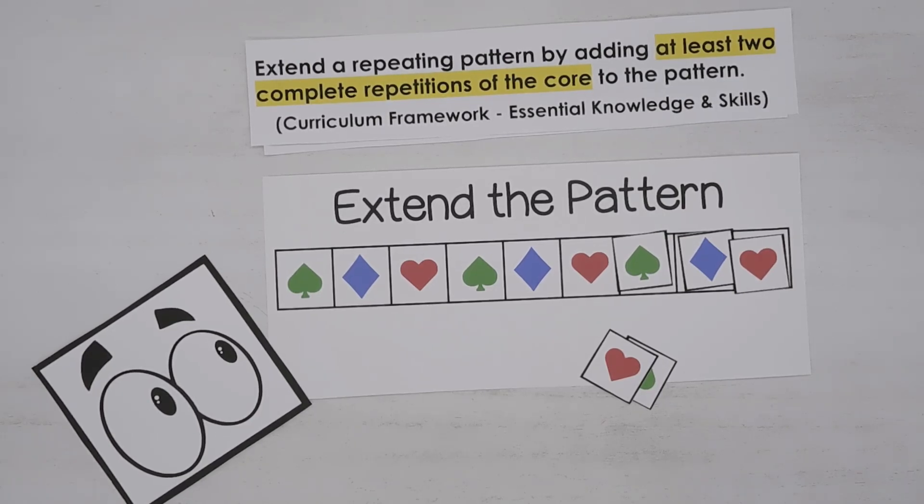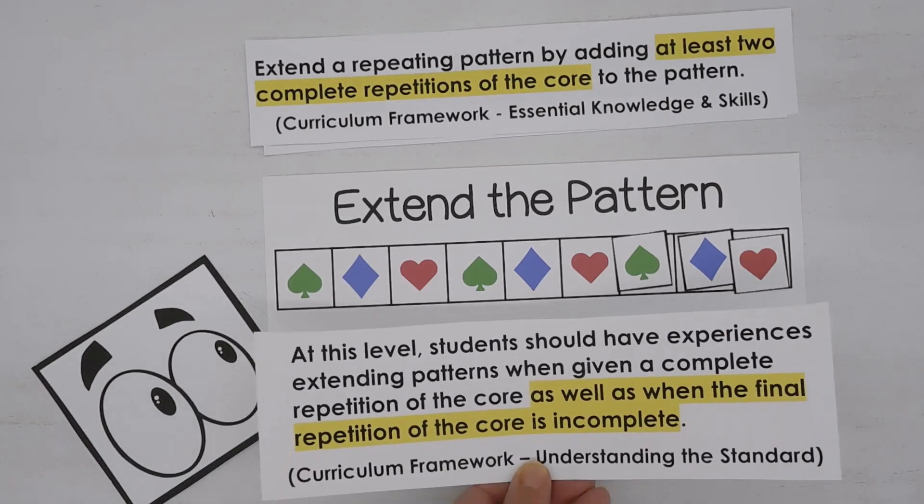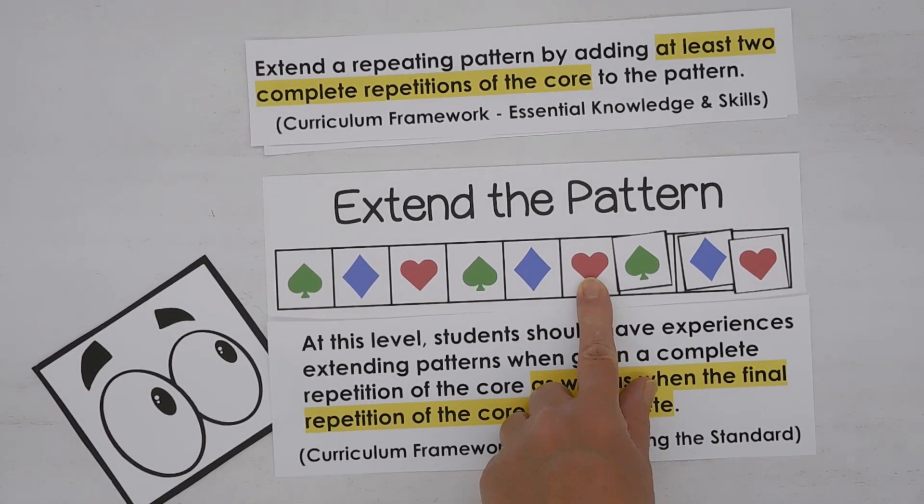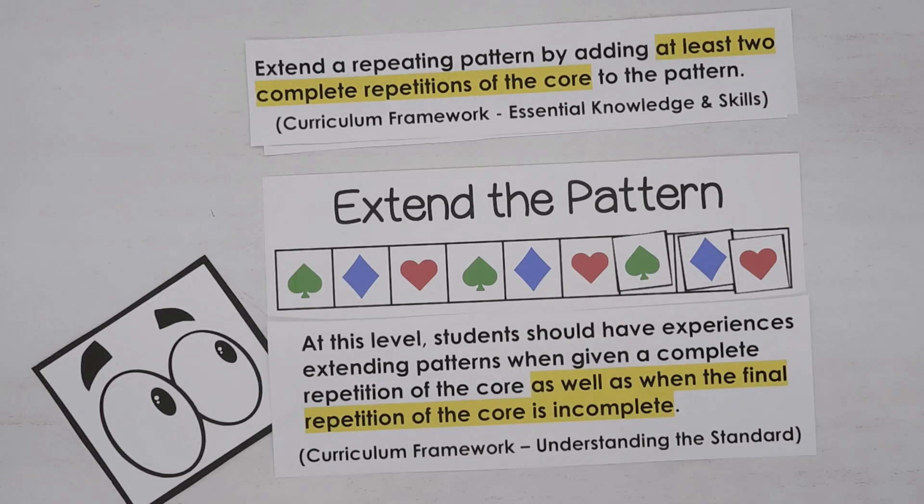Let's look at another part of the curriculum framework. This part says at this level the student should have experiences extending patterns when given a complete repetition of the core, as well as when the final repetition of the core is incomplete. So, for this to fully cover a repeating pattern, we would need to have another line of patterns where this heart maybe would be absent.